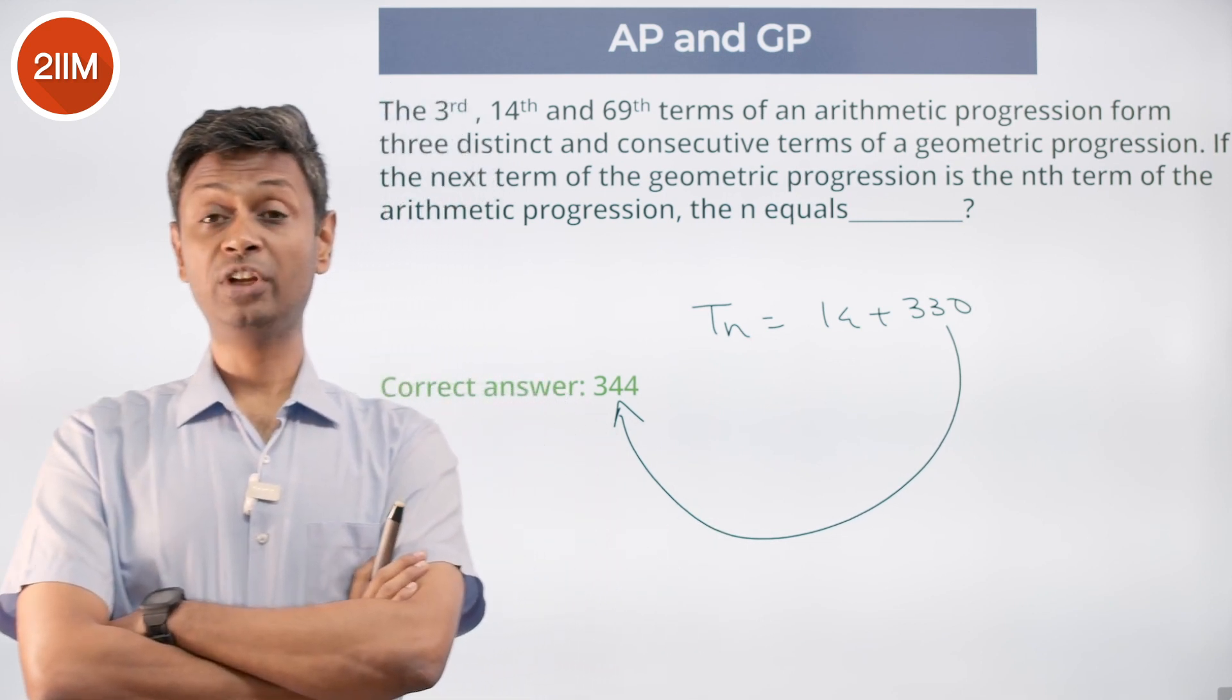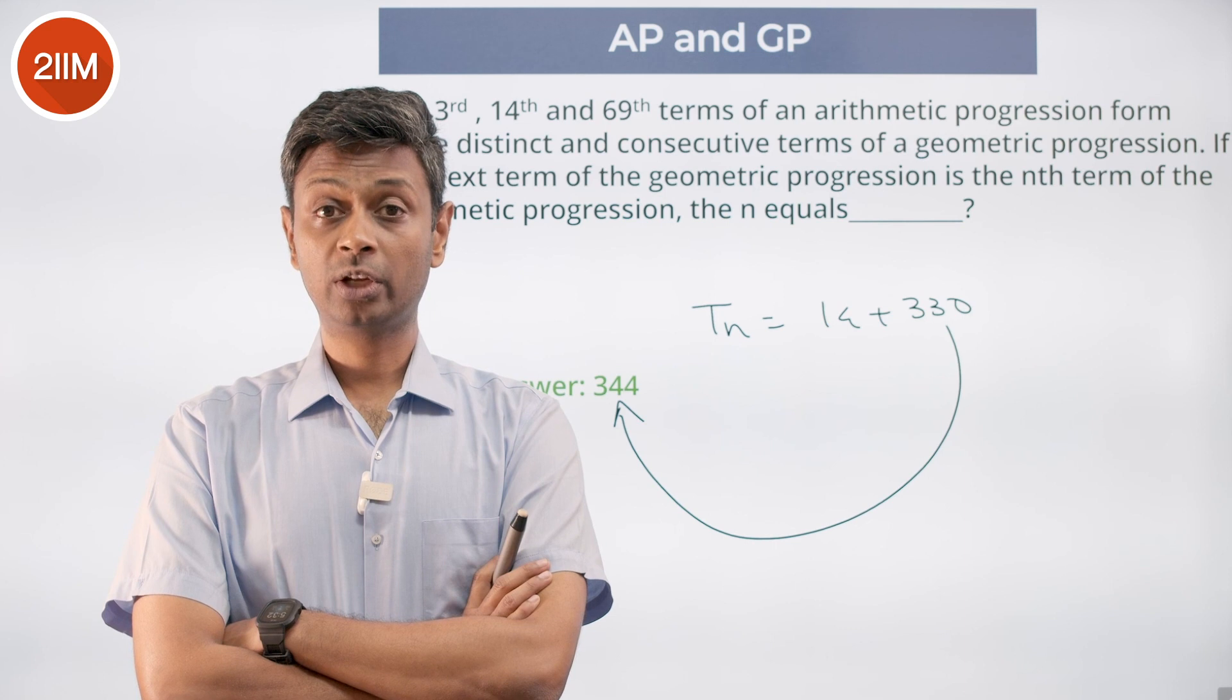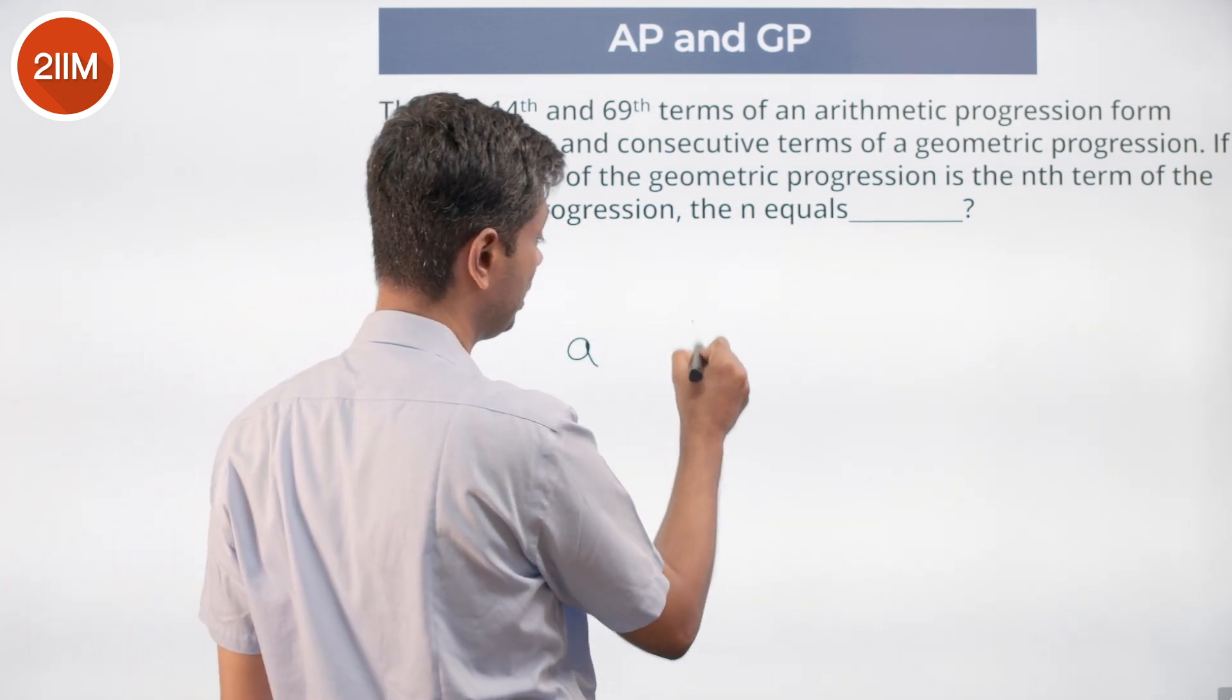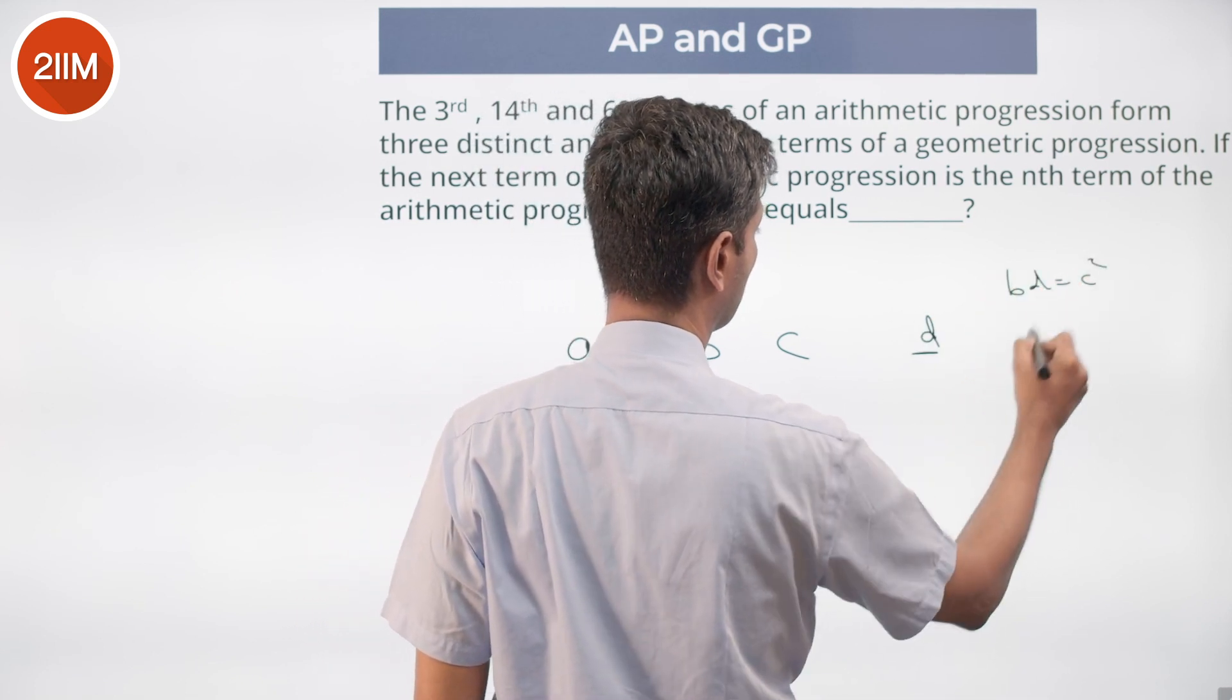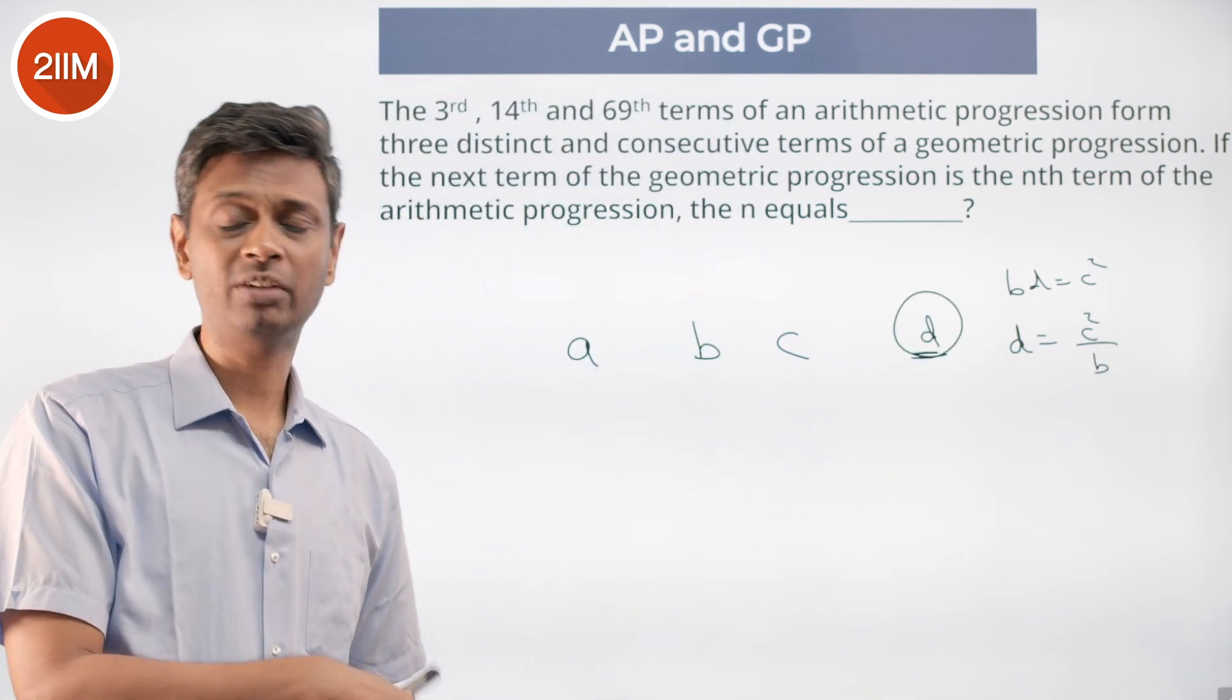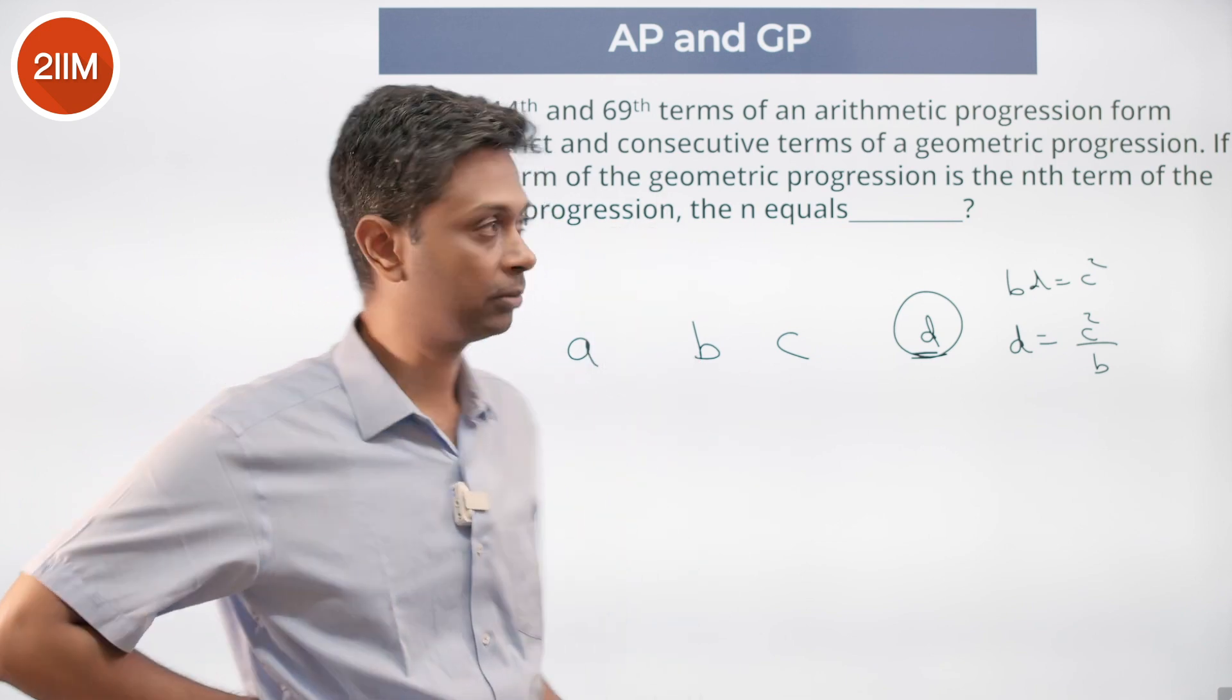Super tricky, very heavy duty algebraic. Something that we need to anchor around one term, use the idea that if you have a, b, c in gp then b square equals ac. Other idea that we use here, we have three terms a, b, c in gp, the fourth term is d, then we know bd equals c square, or d equals c square by b. We use that to derive that term, then come back to the ap and then find how many times common difference we need to add. 344 is the answer. Properly algebraic heavy duty solving involved here.